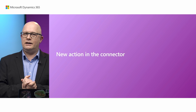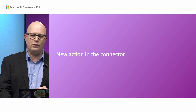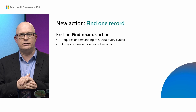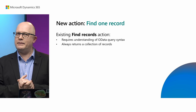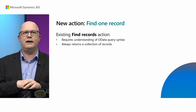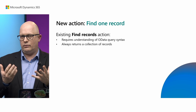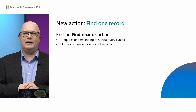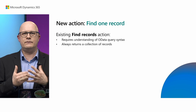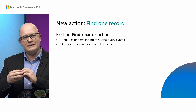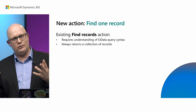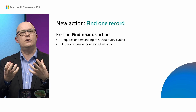Let's talk about an additional improvement in our connector — a new action called Find One Record. Currently we already have an action called Find Records, which is very popular and powerful, but it has some challenges. First, you need to understand the OData query syntax, which not everyone is familiar with. And it always returns a collection of records, even if only one record is what you requested, which is problematic when building more complex flows.